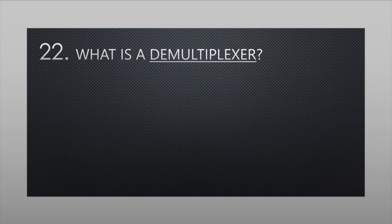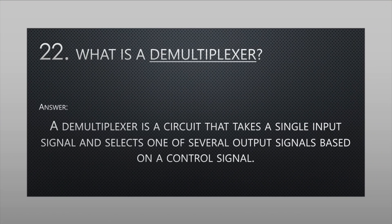What is a D-multiplexer? A D-multiplexer is a circuit that takes a single input signal and selects one of several output signals based on a control signal.